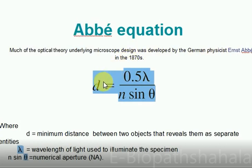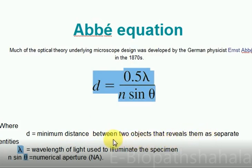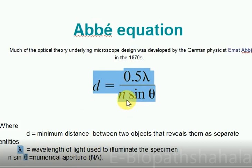d is equal to 0.5 lambda divided by n sin theta, where d is the working distance — the minimum distance between two objects that reveals them as separate entities. 0.5 is a constant, lambda is the wavelength of light used to illuminate the specimen, and n sin theta is the numerical aperture, where theta is the angular aperture and n is the refractive index. We will discuss all these things in the next slide.